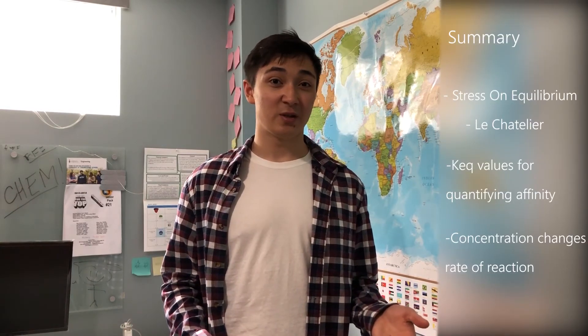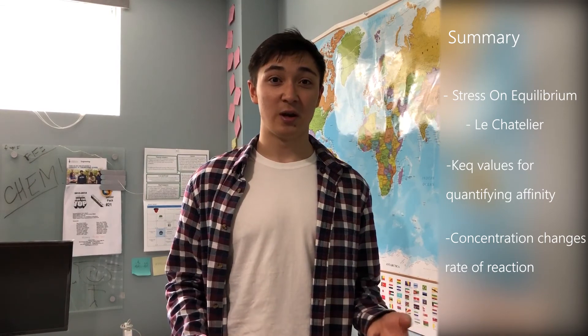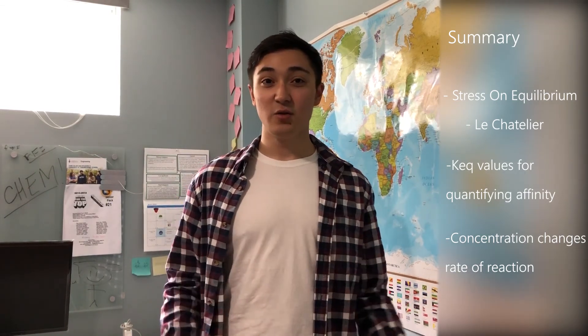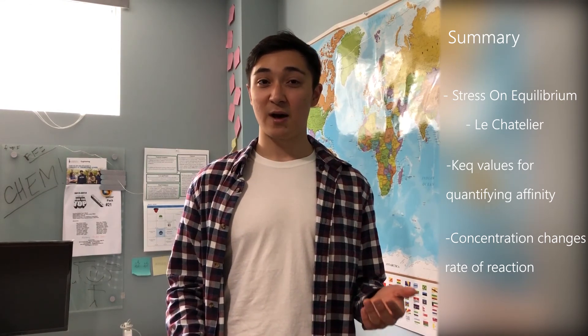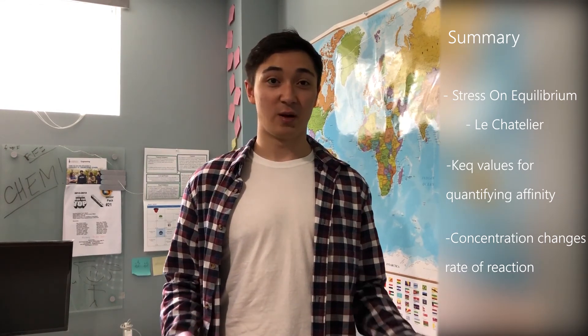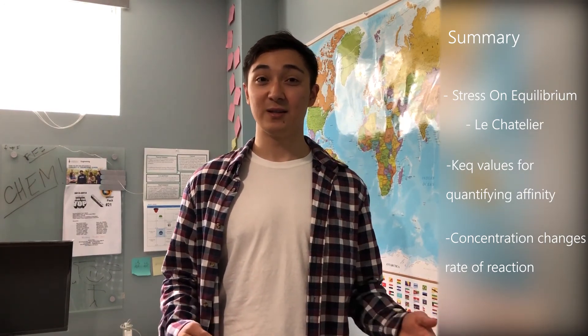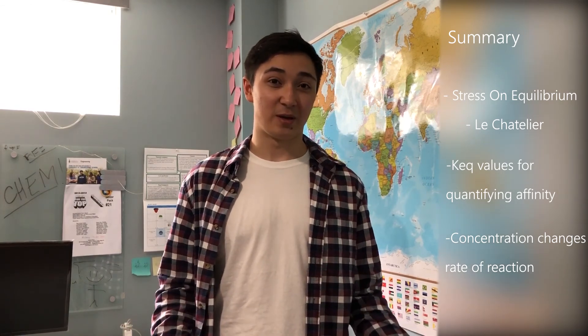To recap: today we learned about the equilibrium reaction of carbon monoxide and hemoglobin. Using Le Chatelier's principle, we saw how quickly the equilibrium can be shifted when there's a change in concentration — which in the case of carbon monoxide can be extremely dangerous. We also saw a new application of looking at K values of equilibrium to determine how strong affinities are for certain molecules, and finally, how a change in concentration can speed up a rate of reaction — in this case, used to help cure carbon monoxide poisoning.